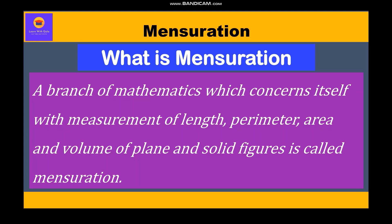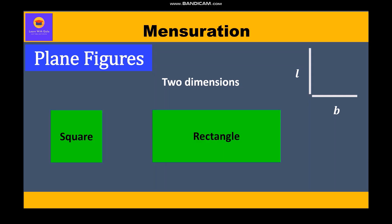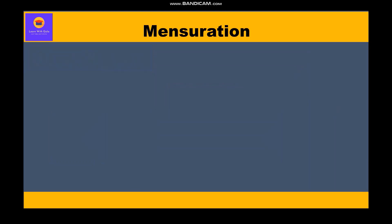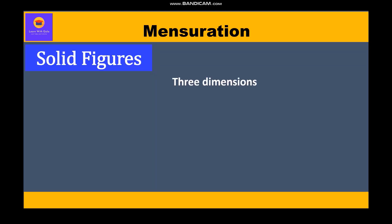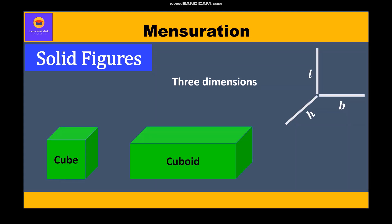Plane figures are those having two dimensions, that is length and breadth — for example, square and rectangle. Solids are those having three dimensions, that is length, breadth, and height — for example, cube and cuboid.